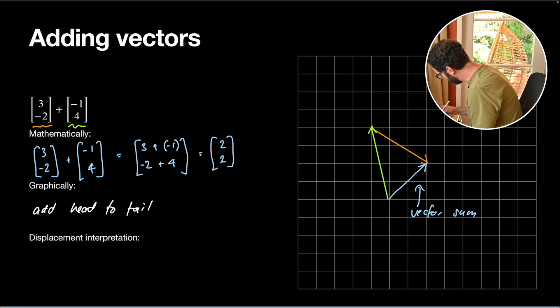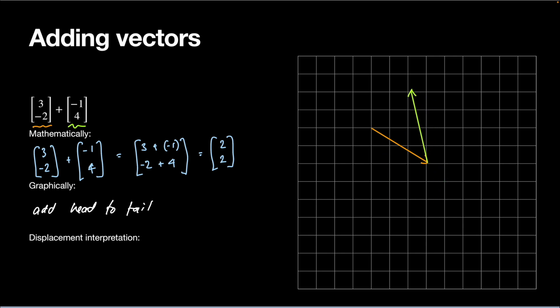You might wonder whether the order matters. If instead I start with the orange one and add the green one on, I still get the same result — the same resultant vector of 2 across and 2 up. It doesn't matter what order we use. Similarly, if I had three vectors, I could continue the chain, and the resultant would just be the vector from the beginning to the end of the full chain.